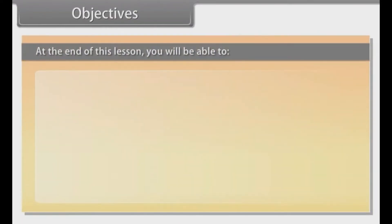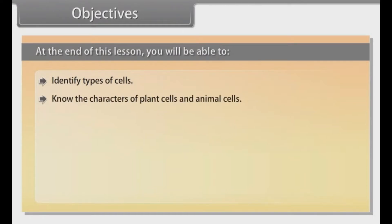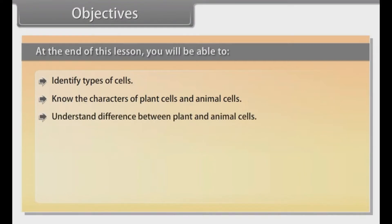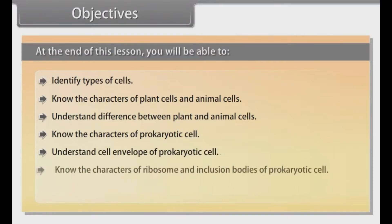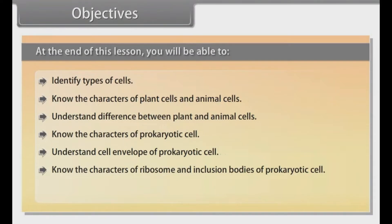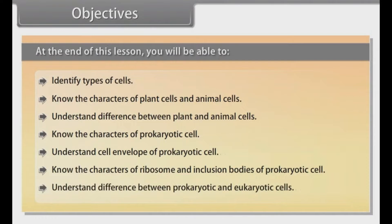At the end of this lesson, you will be able to: identify types of cells; know the characters of plant cells and animal cells; understand the difference between plant and animal cells; know the characters of prokaryotic cells; understand the cell envelope of prokaryotic cells; know the characters of ribosomes and inclusion bodies of prokaryotic cells; and understand the difference between prokaryotic and eukaryotic cells.